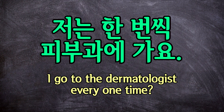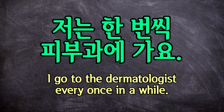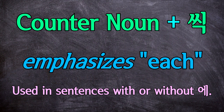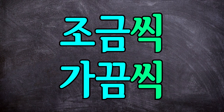저는 한 번씩 피부과에 가요. 'I go to the dermatologist every one time?' Remember that the action is happening multiple times over some period of time, so you can instead translate this as 'I go to the dermatologist every once in a while.' To summarize: you can attach 씩 after a counter, and it adds the meaning of 'each.' Attaching 씩 kind of adds the feeling of 'each' to the word's meaning.